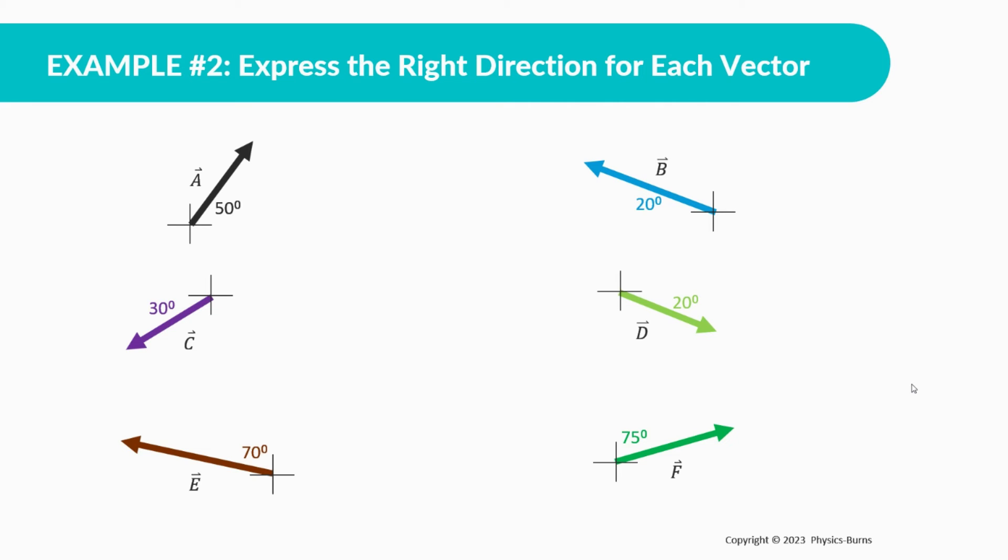Okay. Let's move on. Express the right direction for each vector. Okay. So part A, it seems pretty simple. Remember, it's always starting from zero degrees here. And then we're going counterclockwise this way. So in this case, we're going 50 degrees up this way. So that's just going to be 50 degrees.